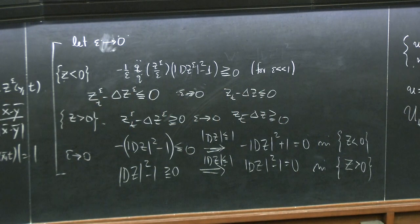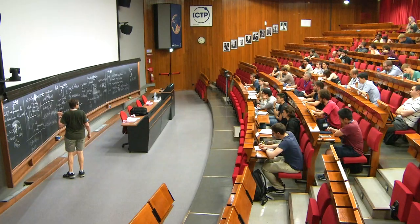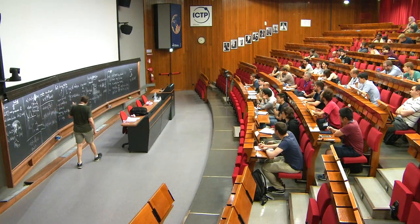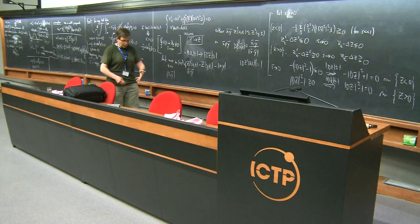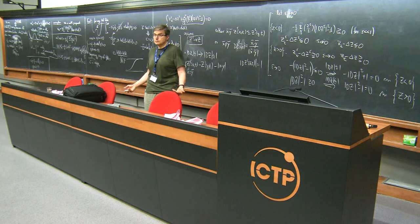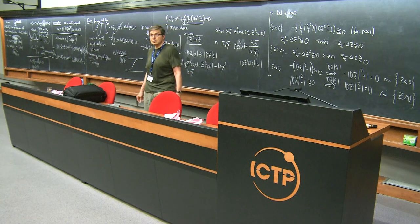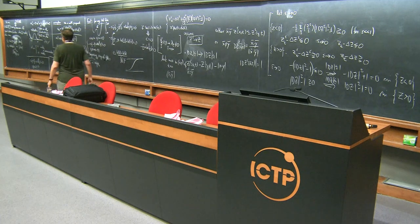We get |DZ|² minus 1 greater than or equal to zero. Together with |DZ| less than or equal to 1, we get |DZ|² minus 1 equals zero. This is in the z-negative set, and the analogous result holds in the z-positive set. So I'm done. You go back to the original change of variables: what we proved is that whenever the limit is positive, U epsilon goes to 1, and whenever the limit is negative, it goes to minus 1. When it's positive, it's inside the set that moves by mean curvature, and when it's negative, it's outside the set that moves by mean curvature. That's the slickest proof you can have for that.